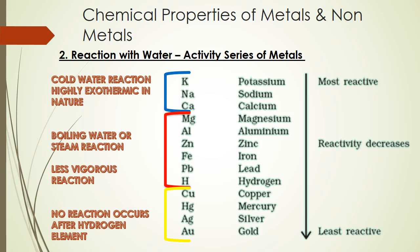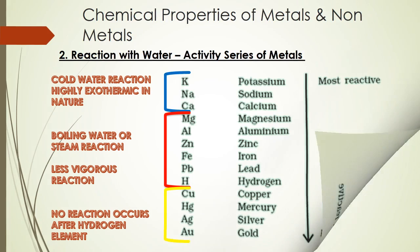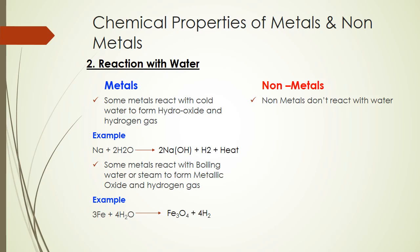Metals react with cold water to form hydroxide and hydrogen gas. For example, sodium reacts with two molecules of water to give two molecules of NaOH plus hydrogen gas plus heat. Some metals react with boiling water or steam to form metallic oxide and hydrogen gas.